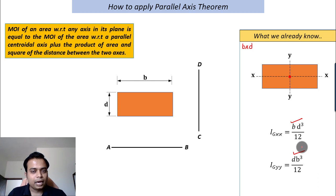This is something we already know. What we wish to calculate is the moment of inertia of this rectangle with respect to axis AB, and we also would like to know the moment of inertia about axis CD. How can these two moments of inertia be worked out? This is where the parallel axis theorem comes in very handy.